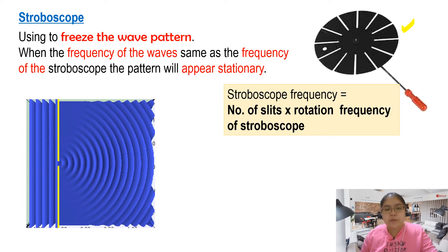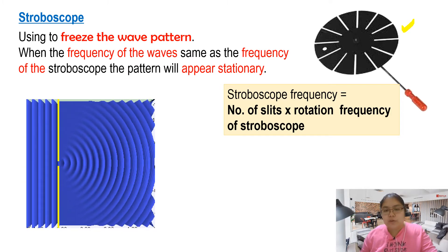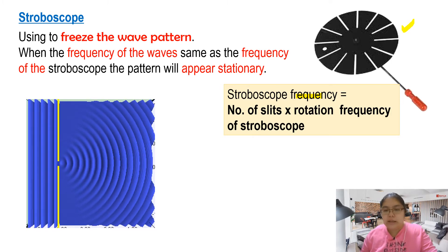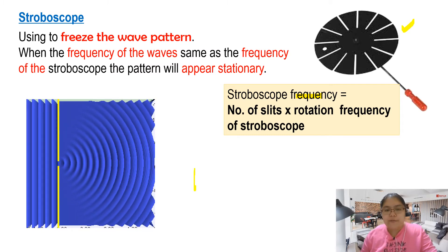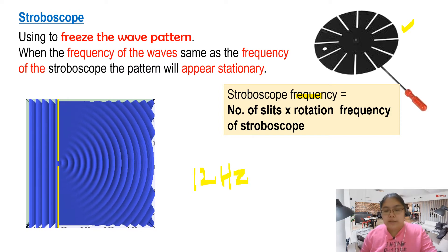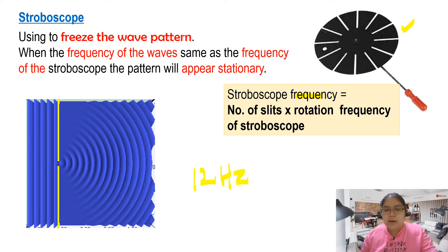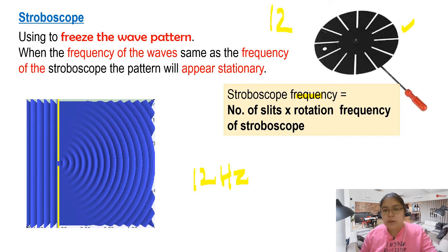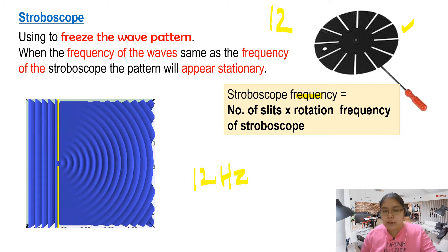If you don't have a stroboscope, this experiment is not functioning. So remember, the frequency will change. The number of slits needs to multiply by the rotation frequency. So if I say the wave of the water is 12 hertz, but I'm using a stroboscope, you must know the stroboscope has how many slits. For this one, it has 12 slits, so you need to multiply by 12. After that, you get the new frequency.